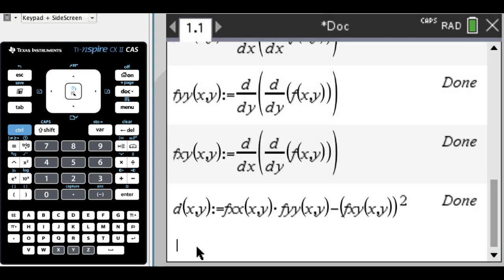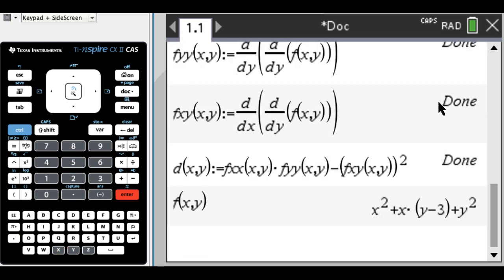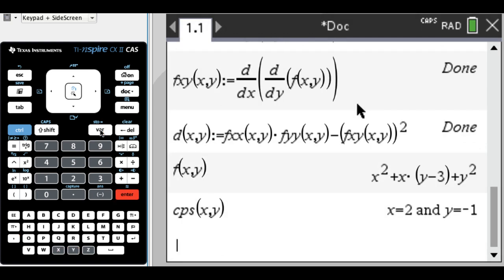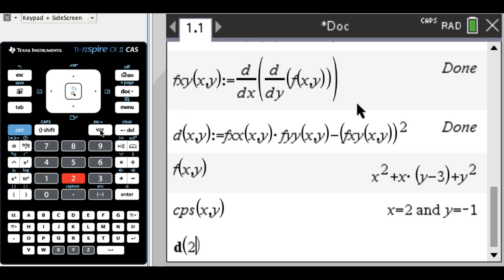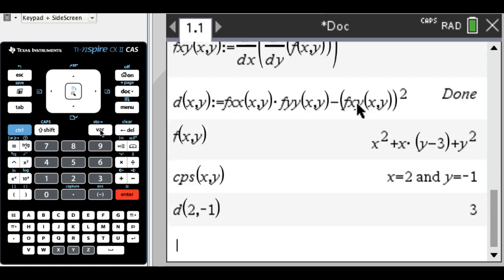So for, well, for the function that I currently have, right, so f of x, y, all right, first thing I would do is I would find the critical points of x, y, and there's only one. I need to take that, and I need to plug it into d. So you could probably just do 2, negative 1, totally fine, so you get a positive.